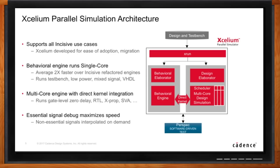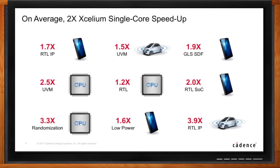In terms of performance on a single core, the performance comes from the refactored and re-architected engines. We don't need the multicore technology to improve single core speedup. We get about a 2x improvement, anywhere from 1.2 to 4x across different kinds of events, with huge improvements in randomization and a number of other areas. We think single core simulation is incredibly important — we need to get through block and IP level simulation before we get to full chip simulation.